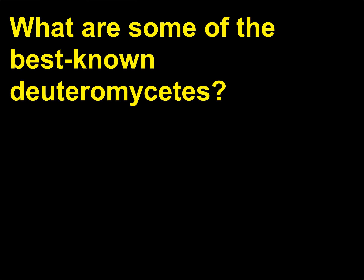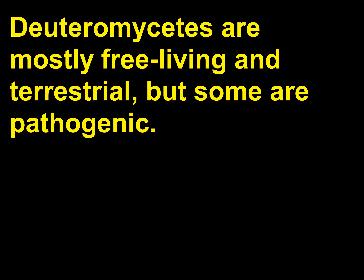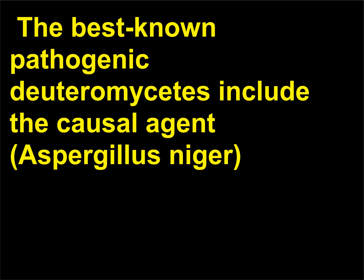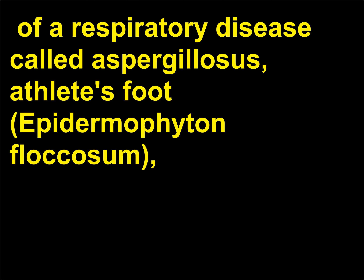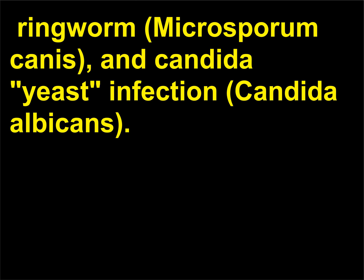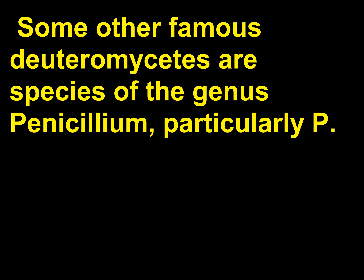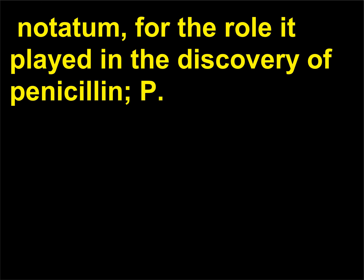What are some of the best-known deuteromycetes? The best-known pathogenic deuteromycetes include the causal agent of a respiratory disease called Aspergillosis (Aspergillus niger), athlete's foot (Epidermophyton floccosum), ringworm (Microsporum canis), and Candida yeast infection (Candida albicans). Some other famous deuteromycetes are species of the genus Penicillium, particularly P. notatum for the role it played in the discovery of penicillin, and P. chrysogenum for the commercial production of penicillin.